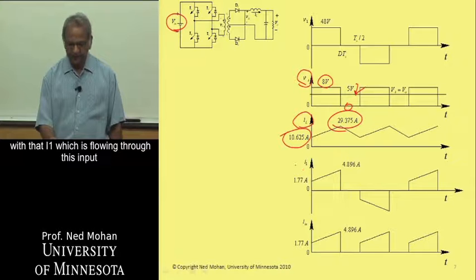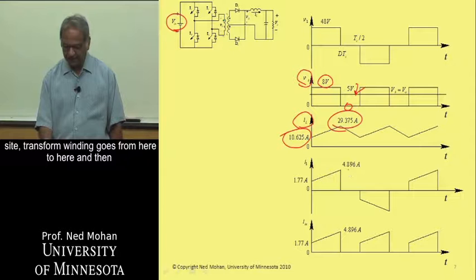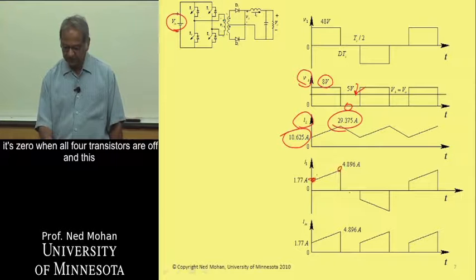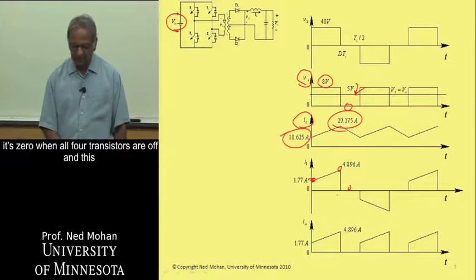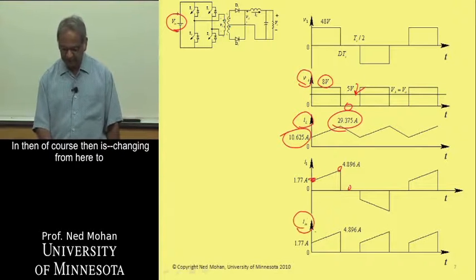I1, which is flowing through this input side transformer winding, goes from here to here, and then it's 0 when all four transistors are off,